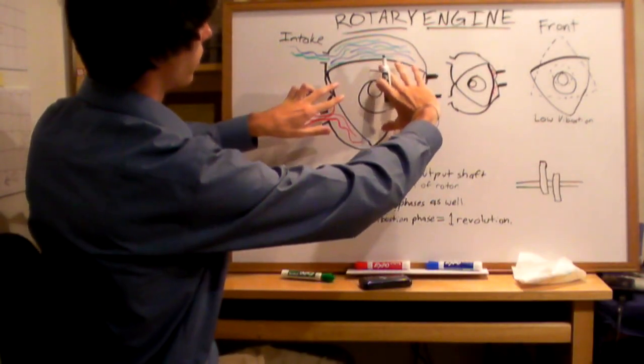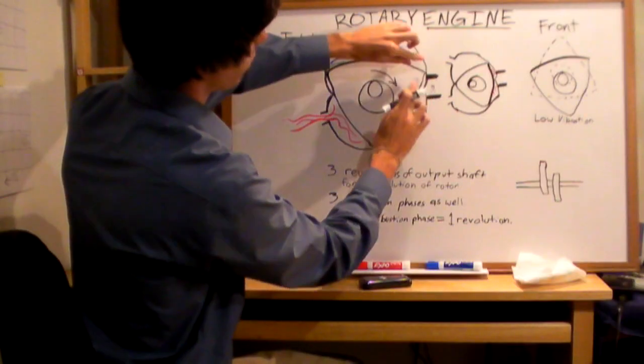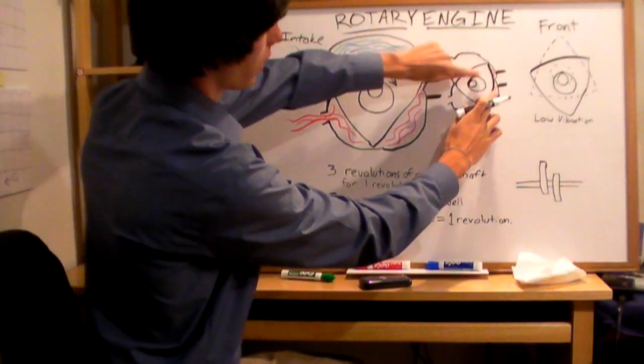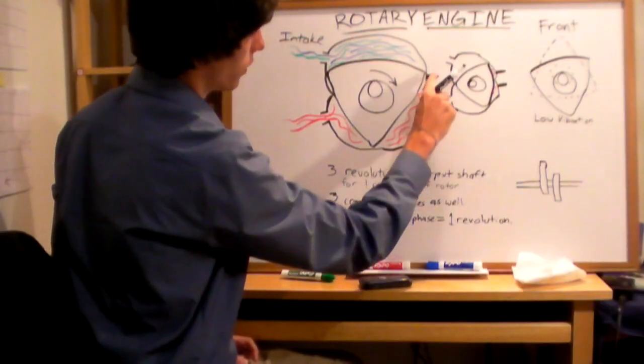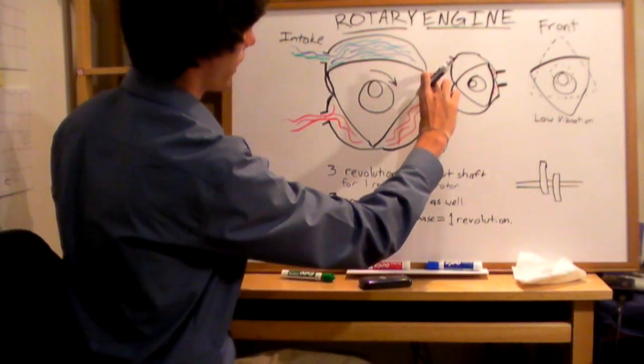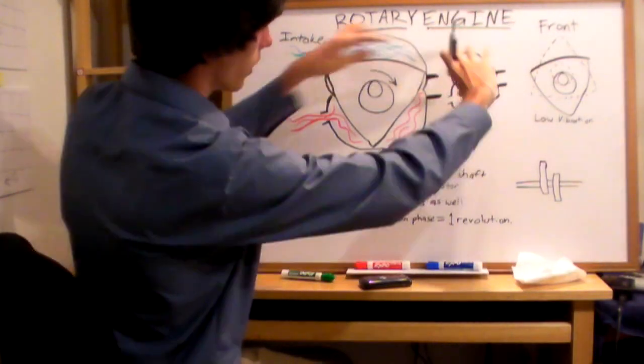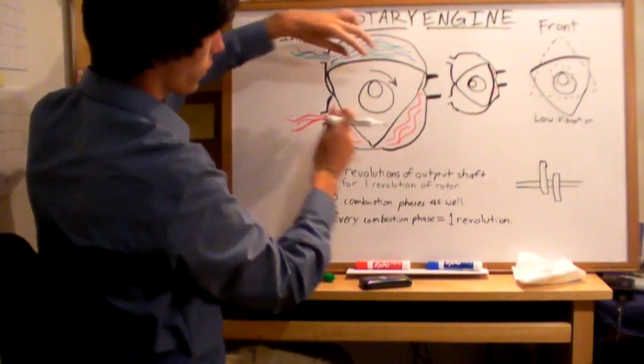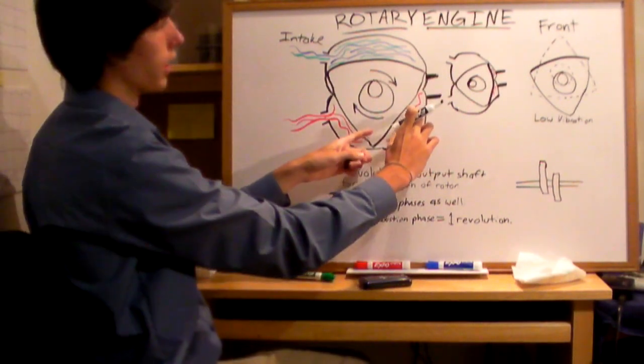The rotor is going to keep rotating and compress this air into a very small amount along this wall right here. These right here are your spark plugs, these two right here, and when they ignite, the rotor is going to be in this position, and then it's going to swing this direction, continue swinging, and combustion is going to happen right here.